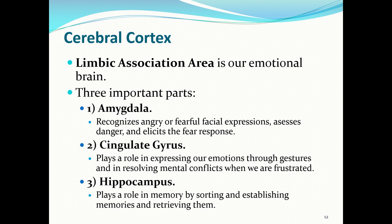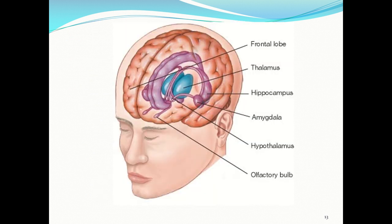The limbic association area is our emotional brain and has three important parts: the amygdala, the cingulate gyrus, and the hippocampus. The amygdala recognizes angry or fearful facial expressions, assesses danger, and elicits the fear response. The cingulate gyrus plays a role in expressing emotions through gestures and in resolving mental conflicts when frustrated. The hippocampus plays a role in memory by sorting, establishing, and retrieving memories. The illustration shows the amygdala and the hippocampus, with the cingulate gyrus located at the top.